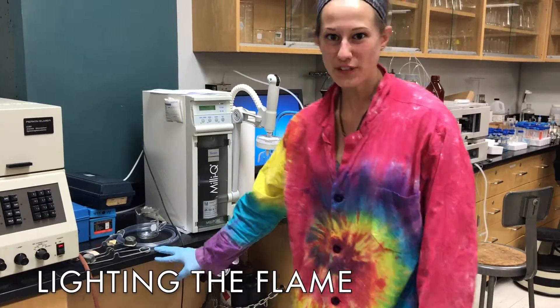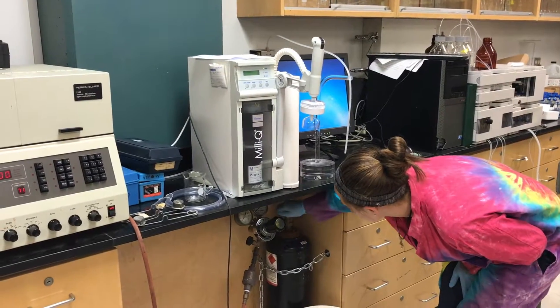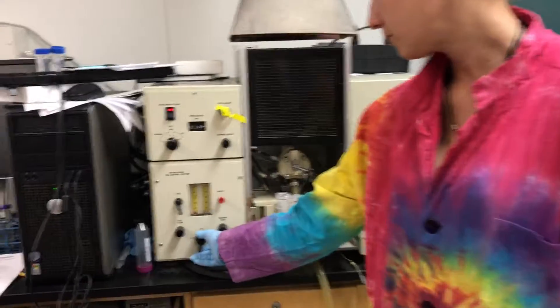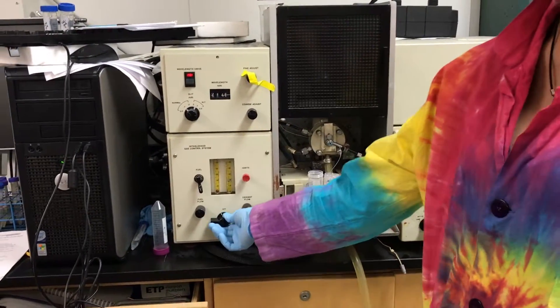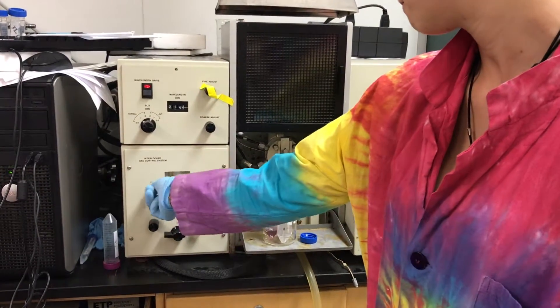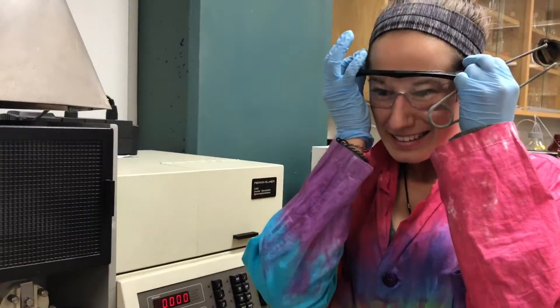To start the flame, open the valve to the acetylene tank. Come over here. Turn the air to on, which is our oxidant, atmospheric oxygen. Turn on the fuel valve, and then ignite the flame. And don't forget your safety glasses.